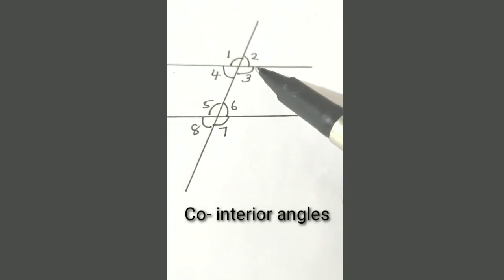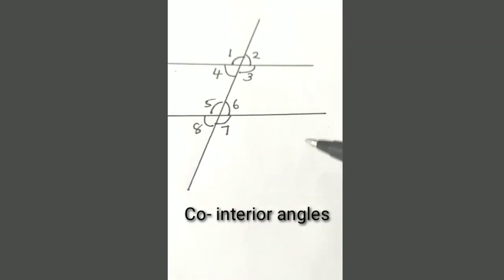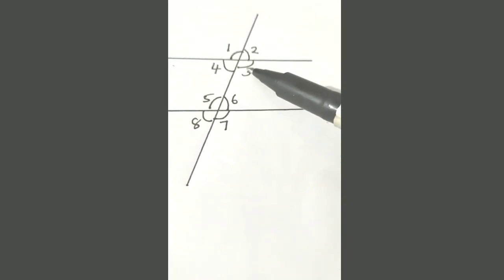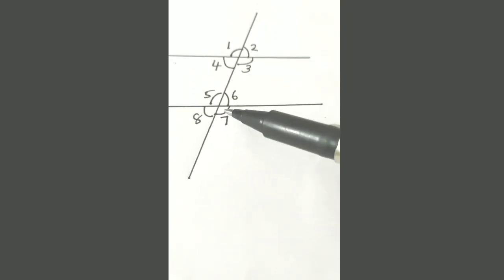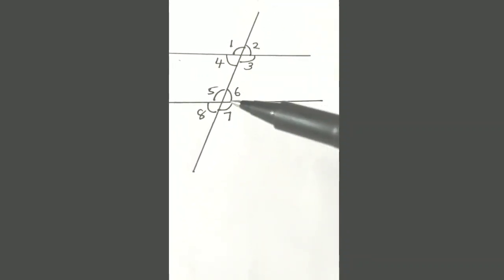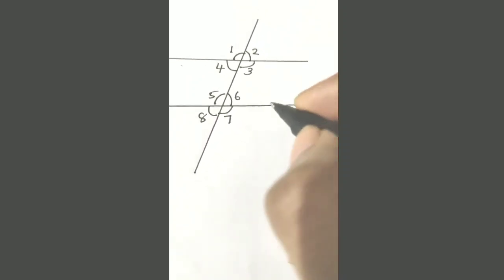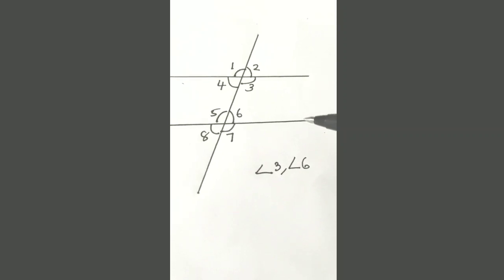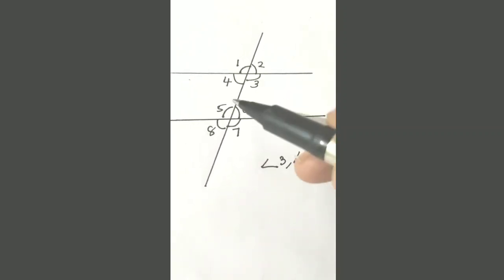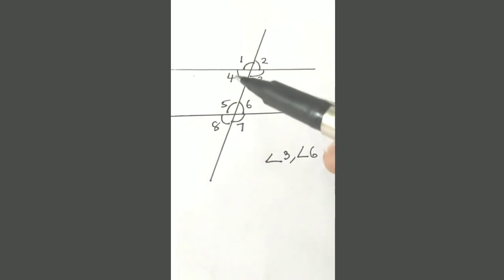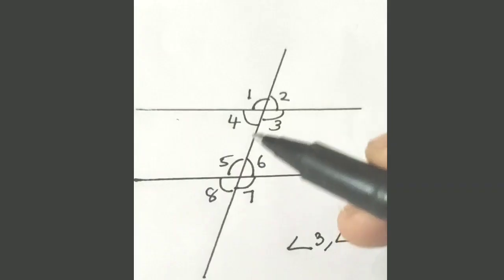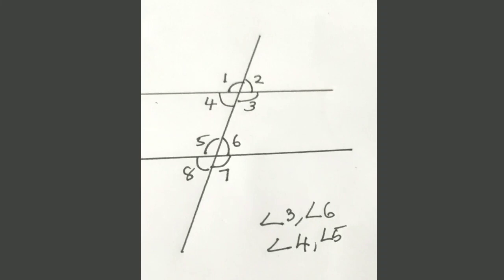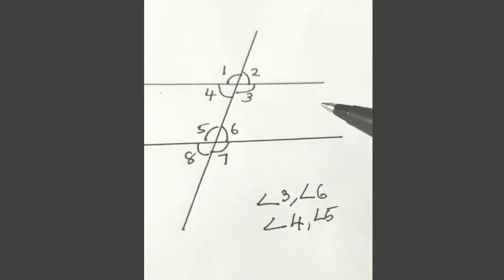We are going to see which are the co-interior angles. Co-interior angles means interior angles formed on the same side. Here you can see angle 3 and angle 6 — they are on the same side of the slanted line, so they are co-interior angles. You can also see that angle 4 and angle 5 are on the same side, so that pair is also co-interior angles.